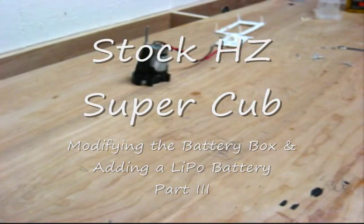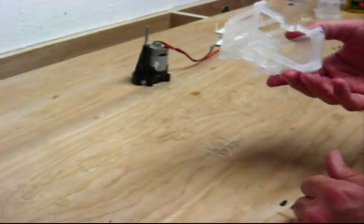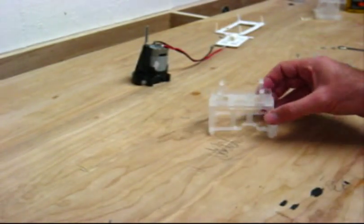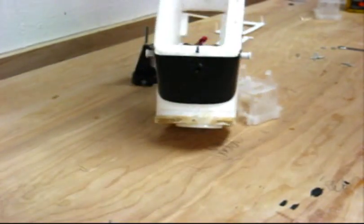This is part three on how to modify a stock Super Cub and yet still make it look stock. I've taken the battery box out and I've completely stripped the inside of my plane out.